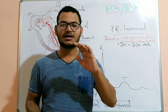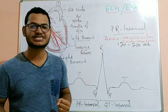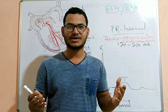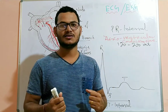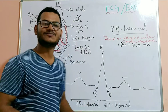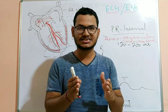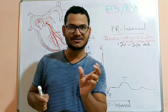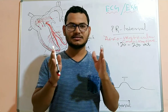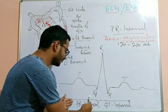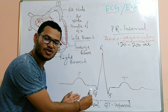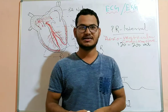The PR interval becomes shorter when the heartbeat is faster, such as during exercise, and becomes longer during low heartbeat, such as during sleep. So the PR interval decreases during exercise and increases during rest or slow heartbeat.